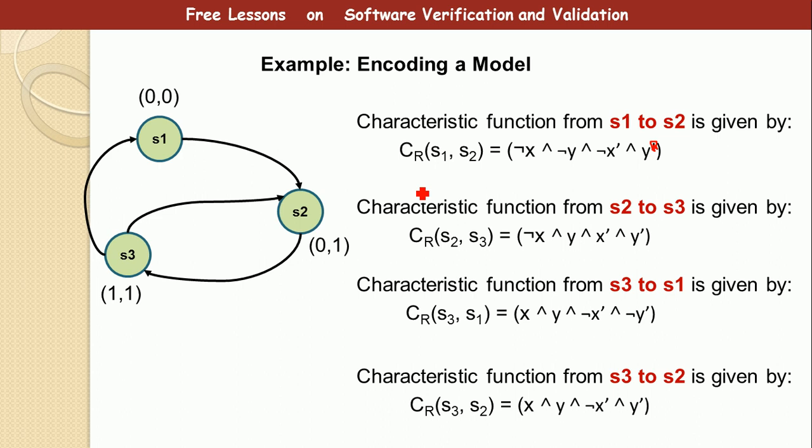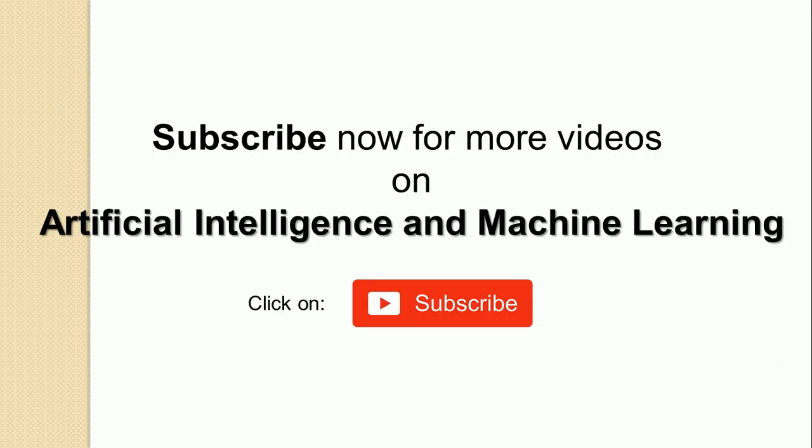But then this is just the starting point. We've actually gotten the characteristic function for each of the transition. But to generate the characteristic function for the whole path, we are going to do that in the next part. I think I'm running out of time. So we are going to stop here. You can move to part 2 so that we continue from here. If you've not subscribed please remember to subscribe so that you can get updates each time there are new lessons on software verification and validation.